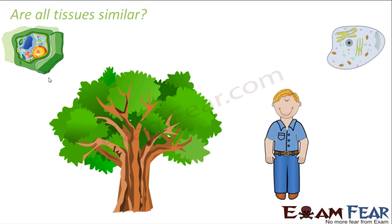No, because the components making up plant tissue and animal tissue are not similar. Therefore, plant tissues and animal tissues are also not similar. Also, tissues are assigned specific functions in accordance with the lifestyle and food habits of that organism. Since the plant cell and animal cell were not exactly similar, the plant tissues and animal tissues are also not exactly similar. Plants and animals are two different kinds of organisms with different lifestyles and food habits, so the functions they want their tissues to perform are also different.